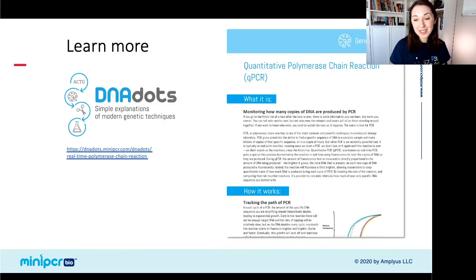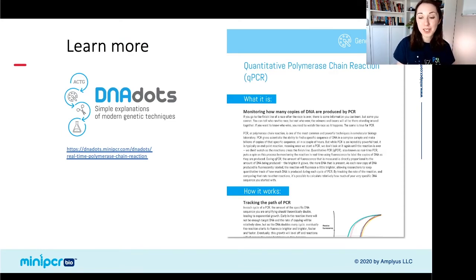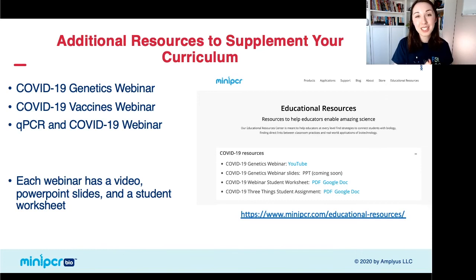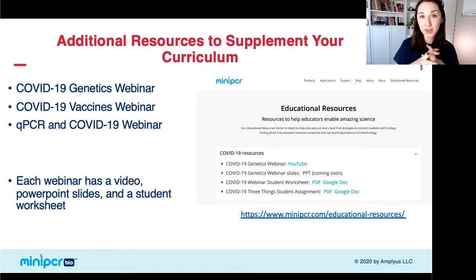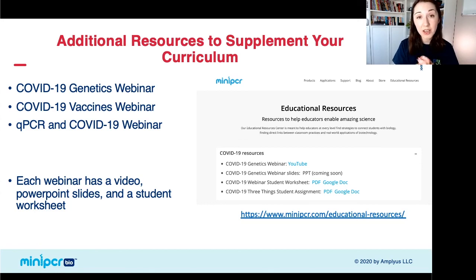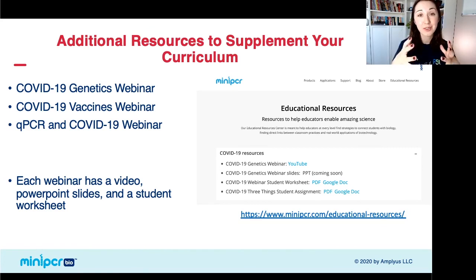An additional resource that goes along with this lab is our DNA dot on quantitative polymerase chain reaction, or qPCR. DNA dots are great quick explanations of modern genetic techniques — usually one or two pages, and really nice deep dives for students who want to go further into the technology. We also have additional resources to supplement your curriculum around COVID-19, including webinars with about an hour-long video walking through either COVID-19 genetics, COVID-19 vaccines, or the usage of qPCR with COVID-19 testing, along with PowerPoint slides and a student worksheet for each.